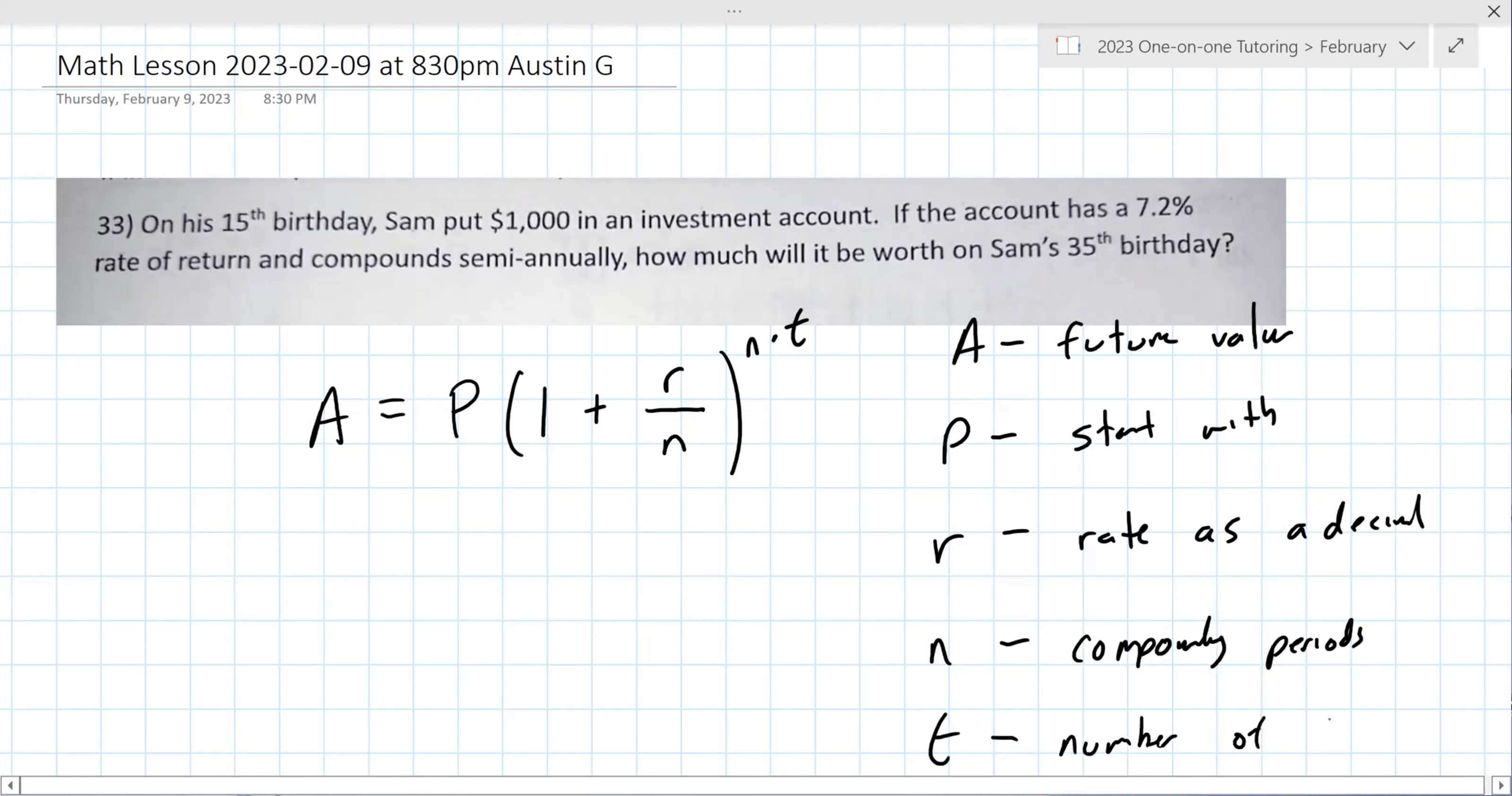R is the rate as a decimal. Very important. You have to convert that rate to a decimal. N is the number of compounding periods. And that depends on the word, like daily, annually. On this problem, it's semi-annually. So all of these mean something. And then t is typically the number of years.